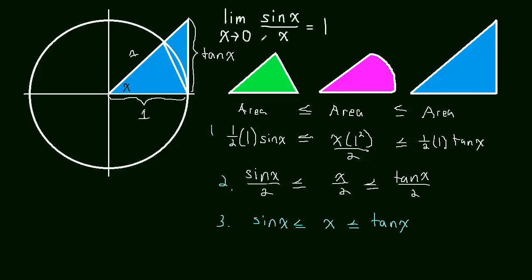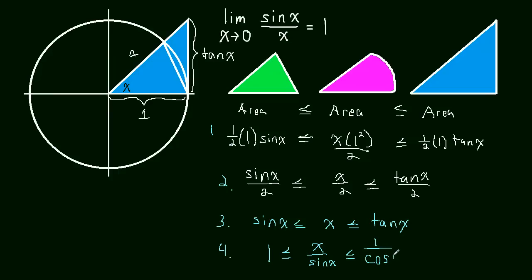Now let's divide everything by sin x. We get 1 is less than or equal to x over sin x, which is less than or equal to — well, tan x is sine over cosine, so if you divide by sin x the sines cancel and you get 1 over cos x.